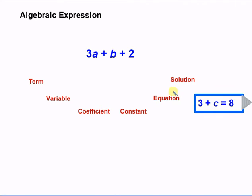We also have a solution. A solution is a number that you can substitute for your variable that makes the equation true. For example, c is equal to 5. Now if I substitute 5 in for c, then I get 3 plus 5. And 3 plus 5 is equal to 8. So c equals 5 is a solution to my equation.